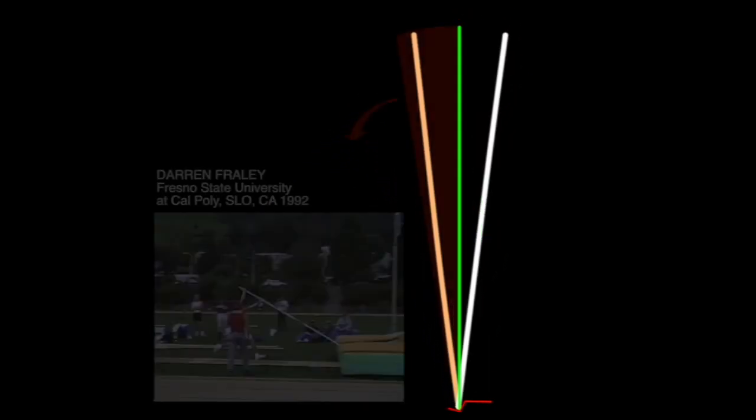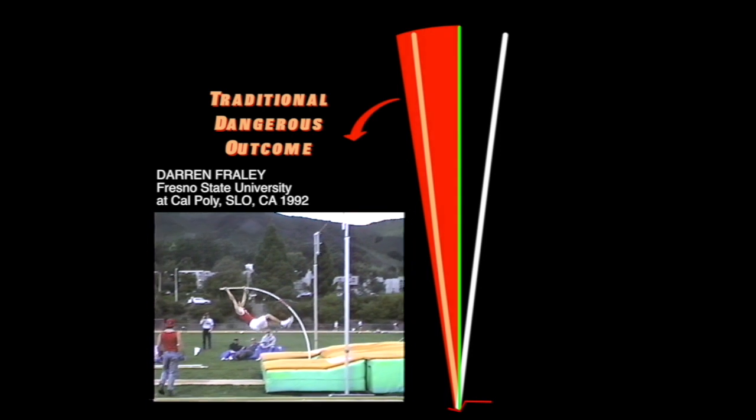This example, comparing the results of the orthodox pole bend next to the Airstrike pole bend, illustrates why primitive archaic vaulting concepts are so inefficient and hazardous.